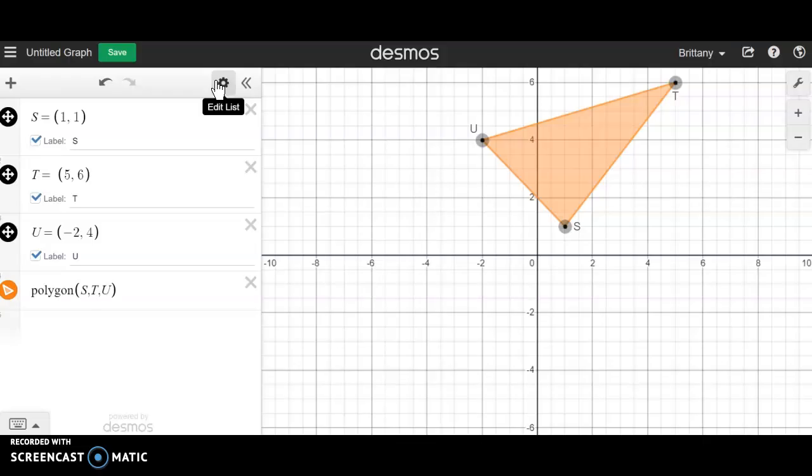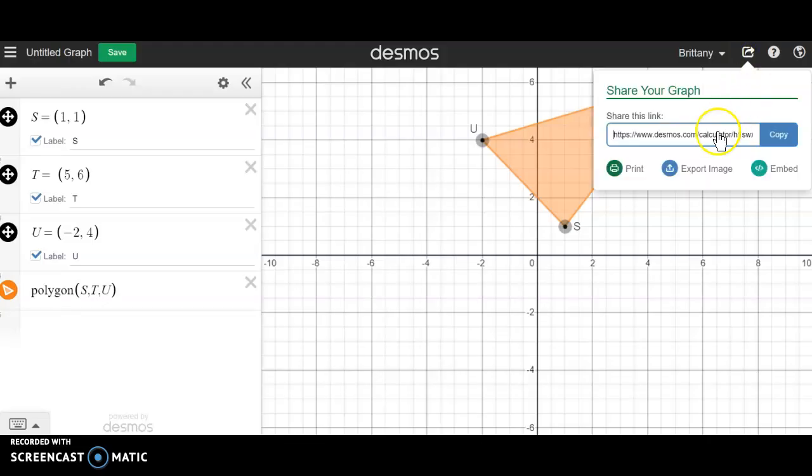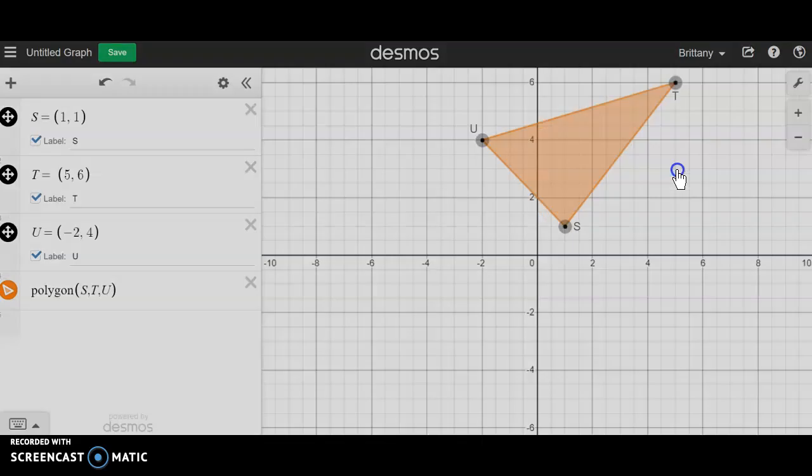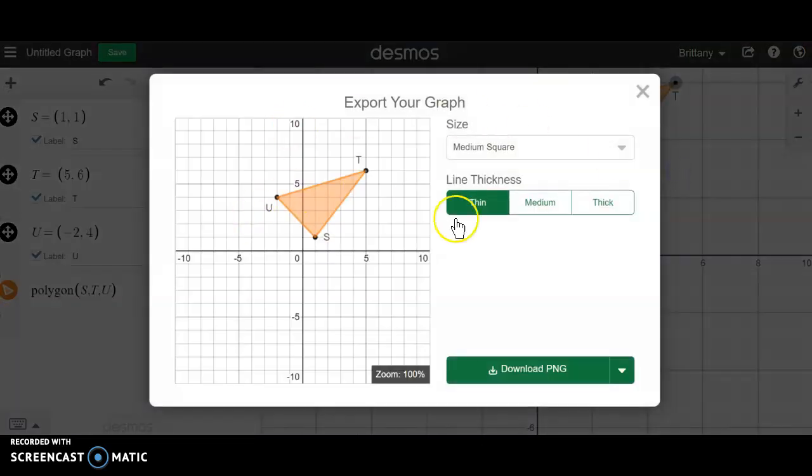I could then go and export a picture of this by clicking on share graph and then export image, pick my size, and then I can download the image. And this can be what you use for your Flipgrid assignment, so hope that helps.